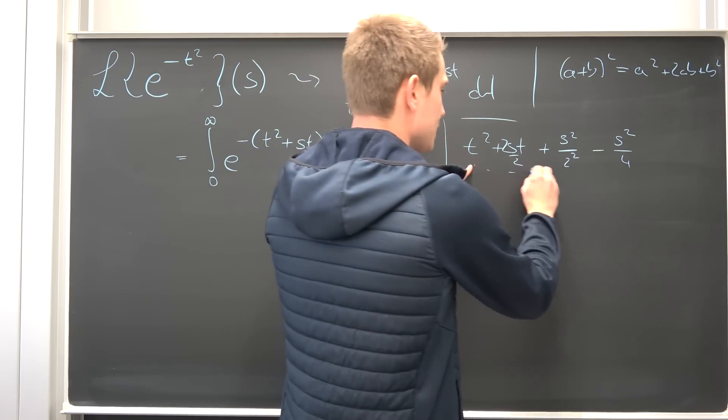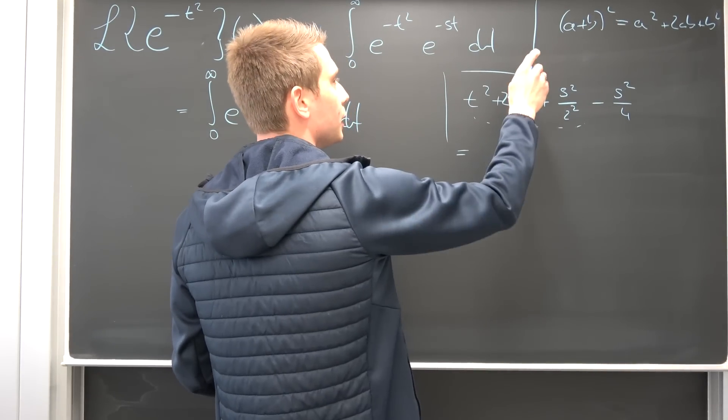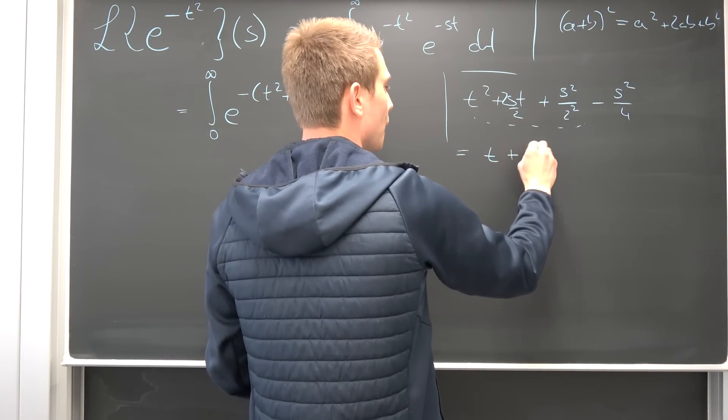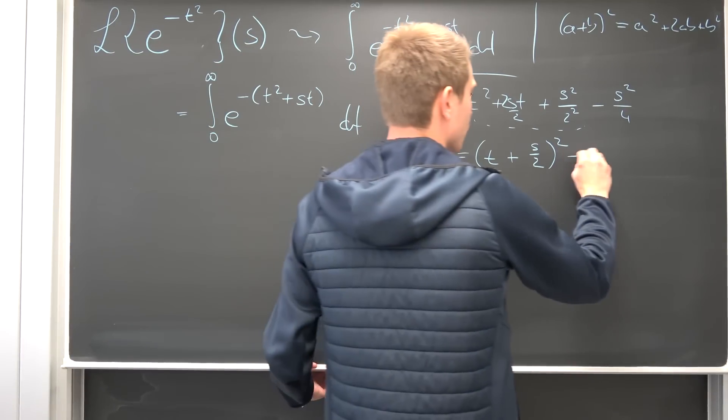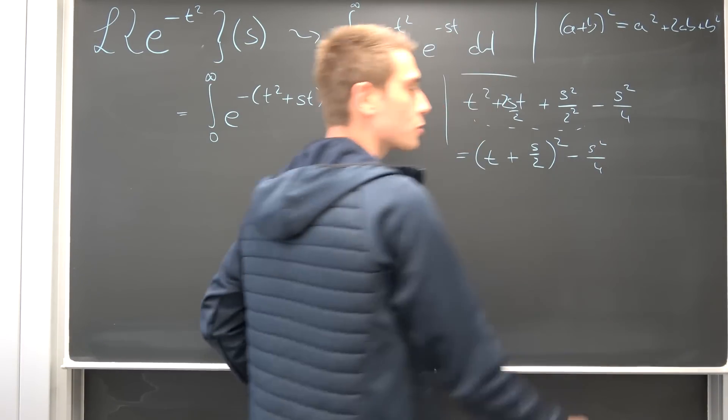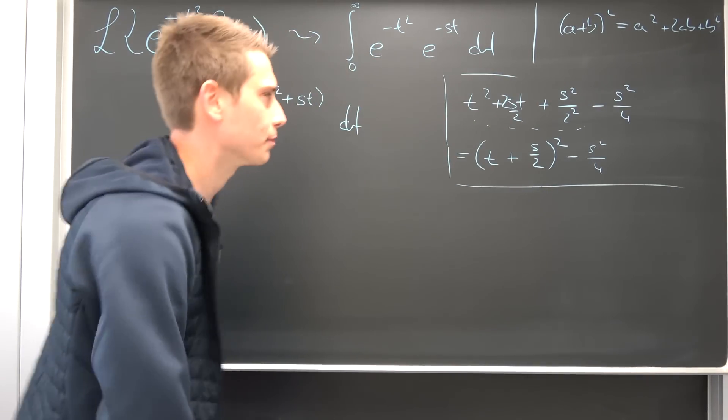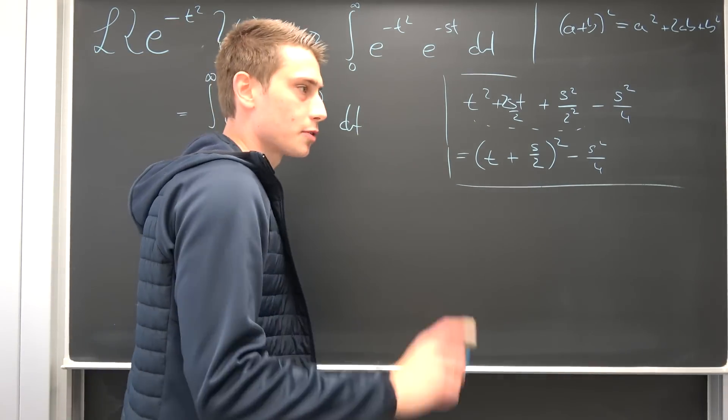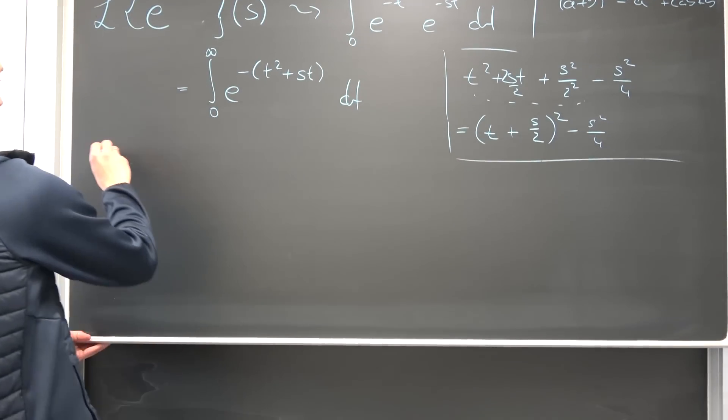Now, this thing right here is exactly our a plus b squared, meaning, this is nothing but t plus s over 2, but the whole thing squared minus s squared over 4. That's what you guys call completing the square. I think I made a video on that. I'm not really sure. Yeah, I made videos in German and English on that actually. So we can plug this stuff into here, that's quite the same expression.